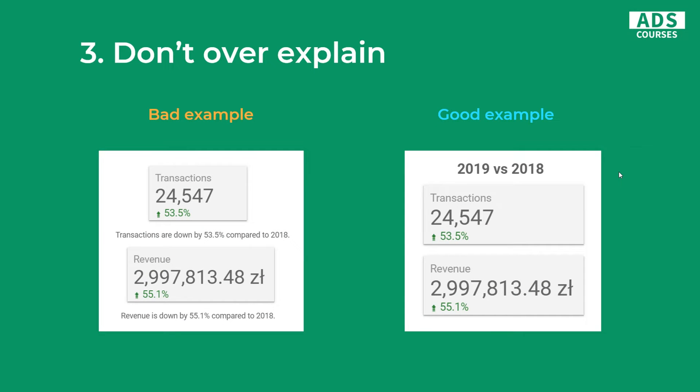The third one is don't over explain. You should use titles for your charts or scorecards, but you need to keep them simple. In this bad example, we actually write the same thing that is within the scorecard — 'Transactions are down by 33% compared to 2018.' But we could actually write the same thing way simpler, like in the good example: simply '2019 versus 2018.' And the scorecards tell the story themselves.